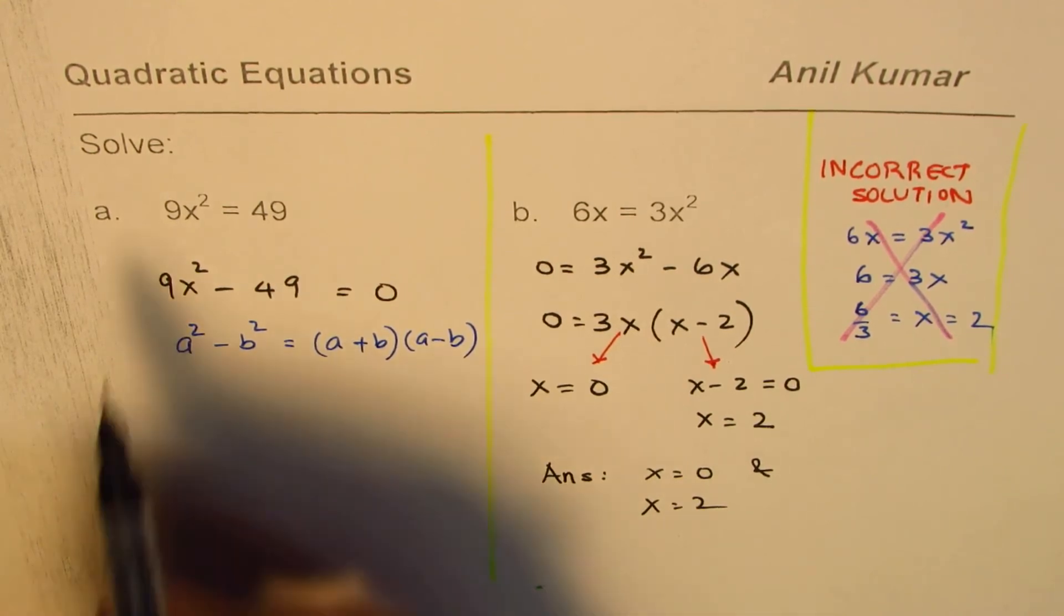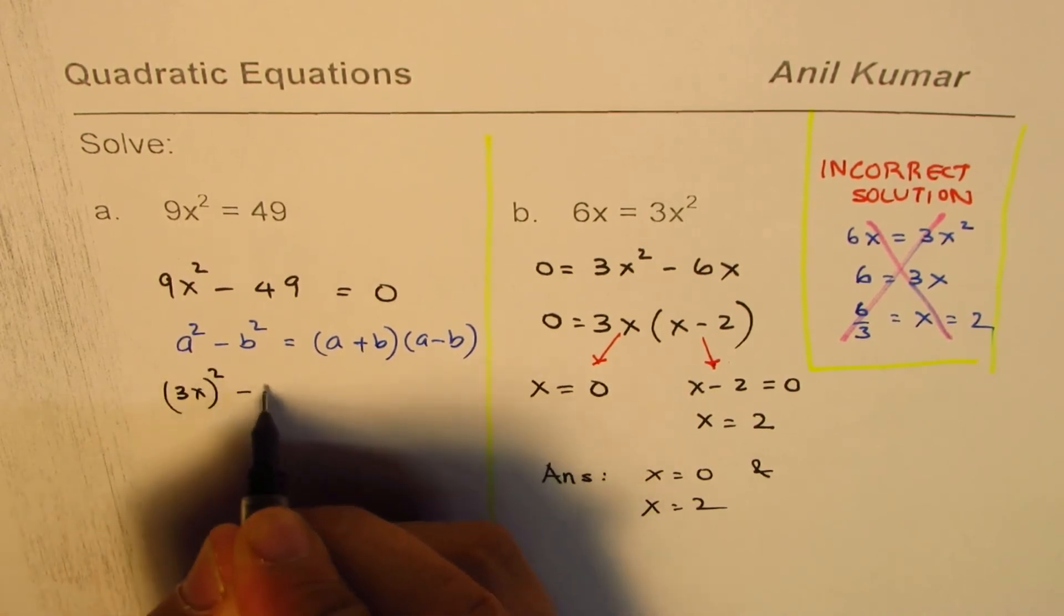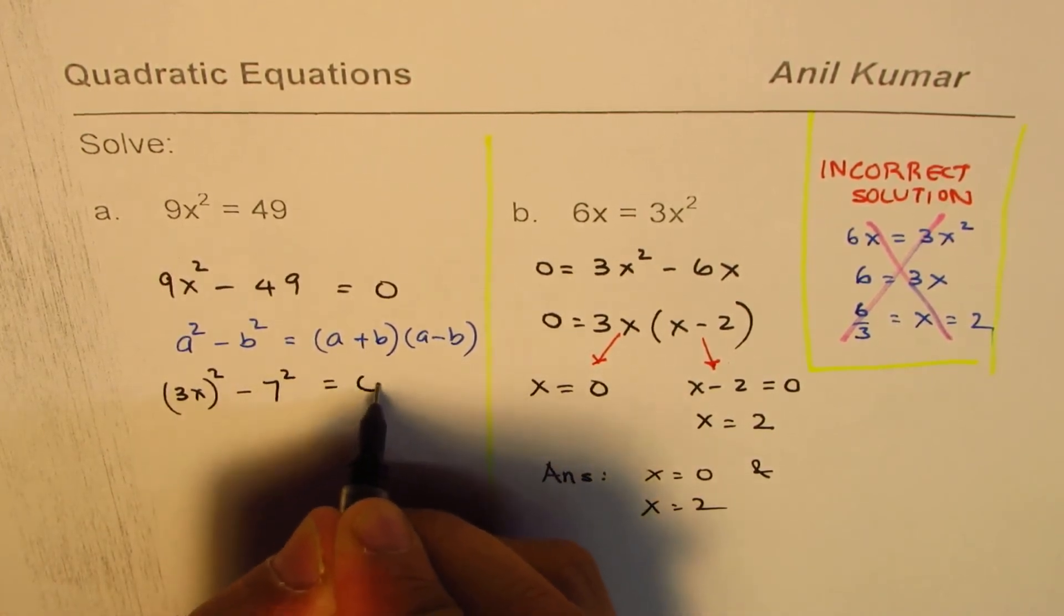That is a squared minus b squared could be written as a plus b times a minus b. So in this case, think like this: 3x whole square minus 7 squared equals to 0. Do you see that?